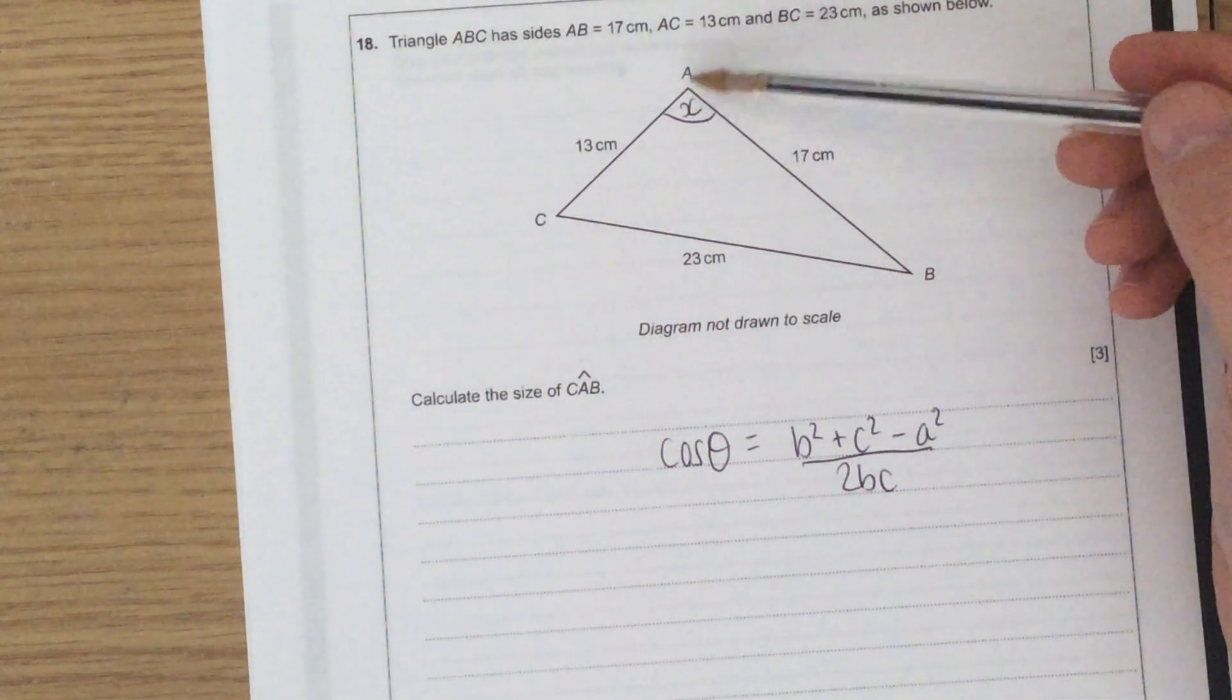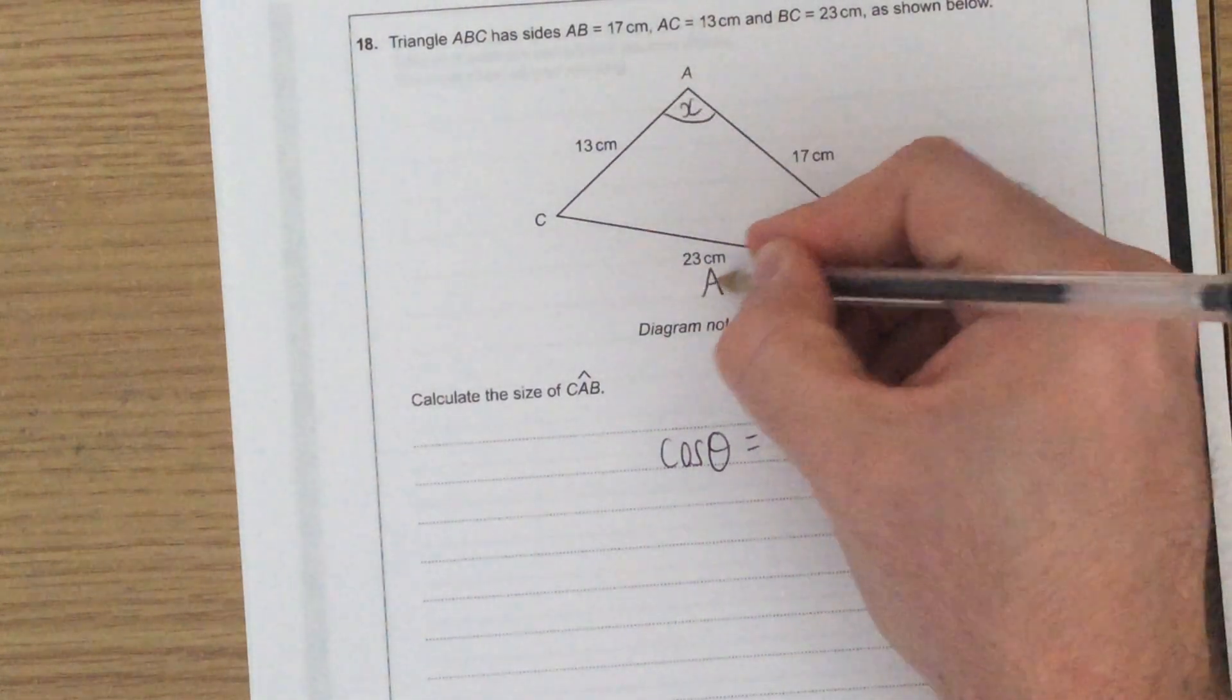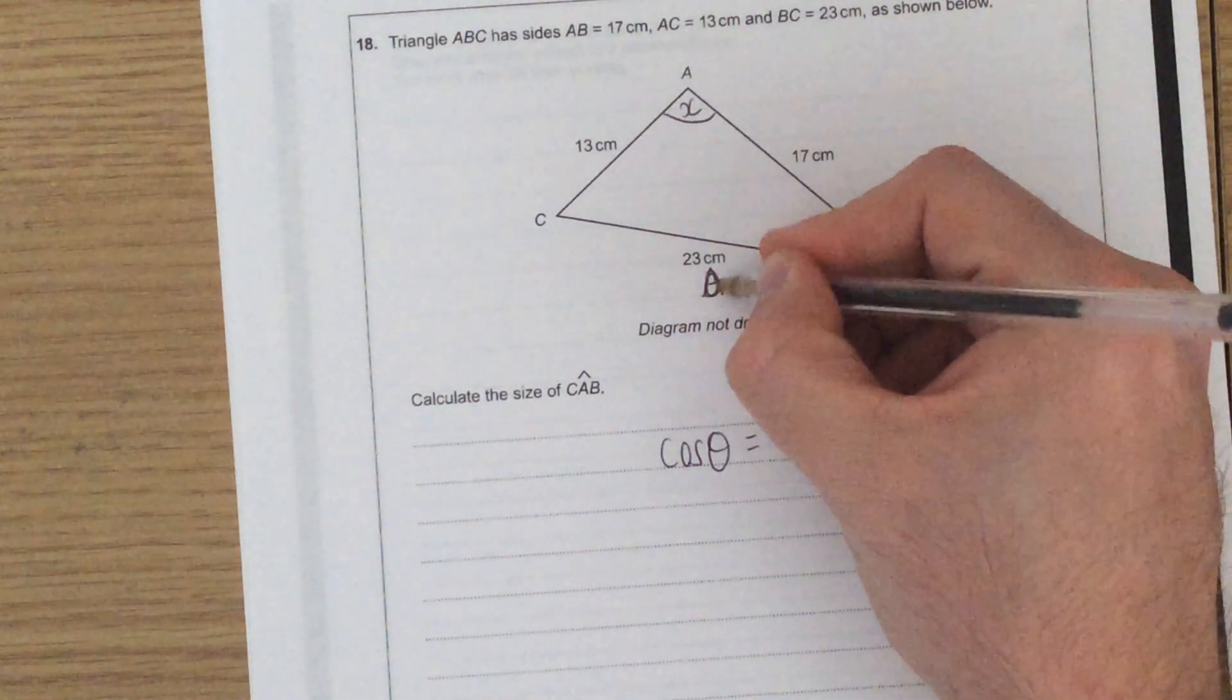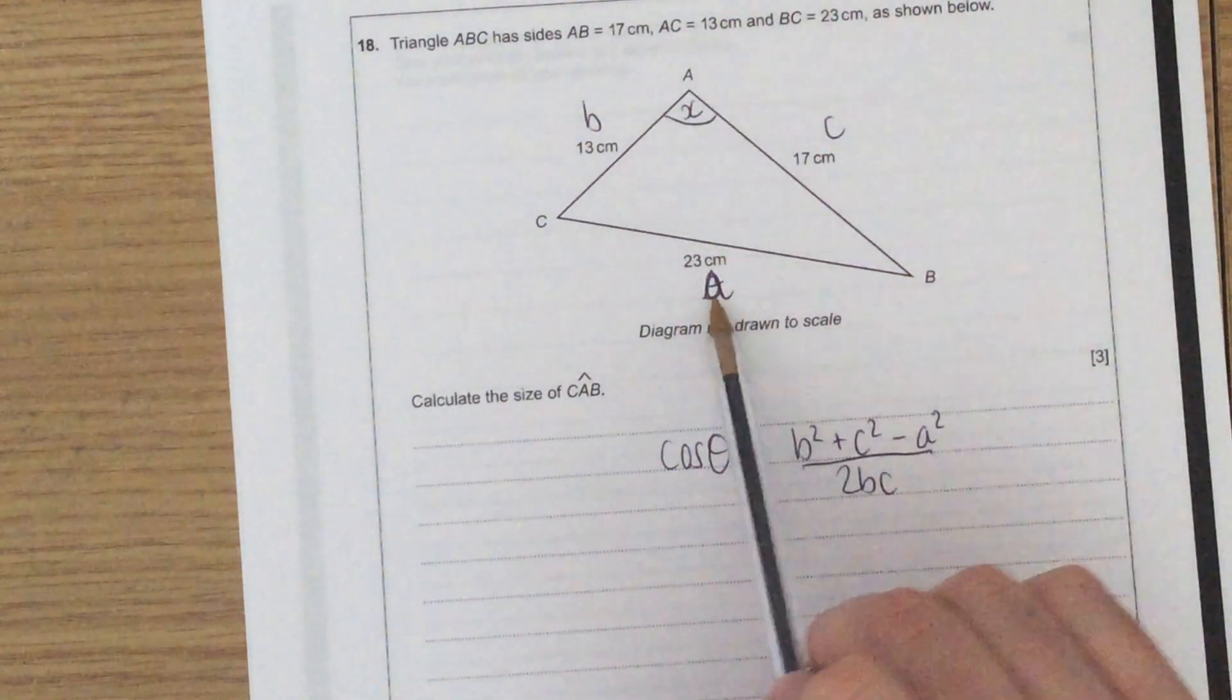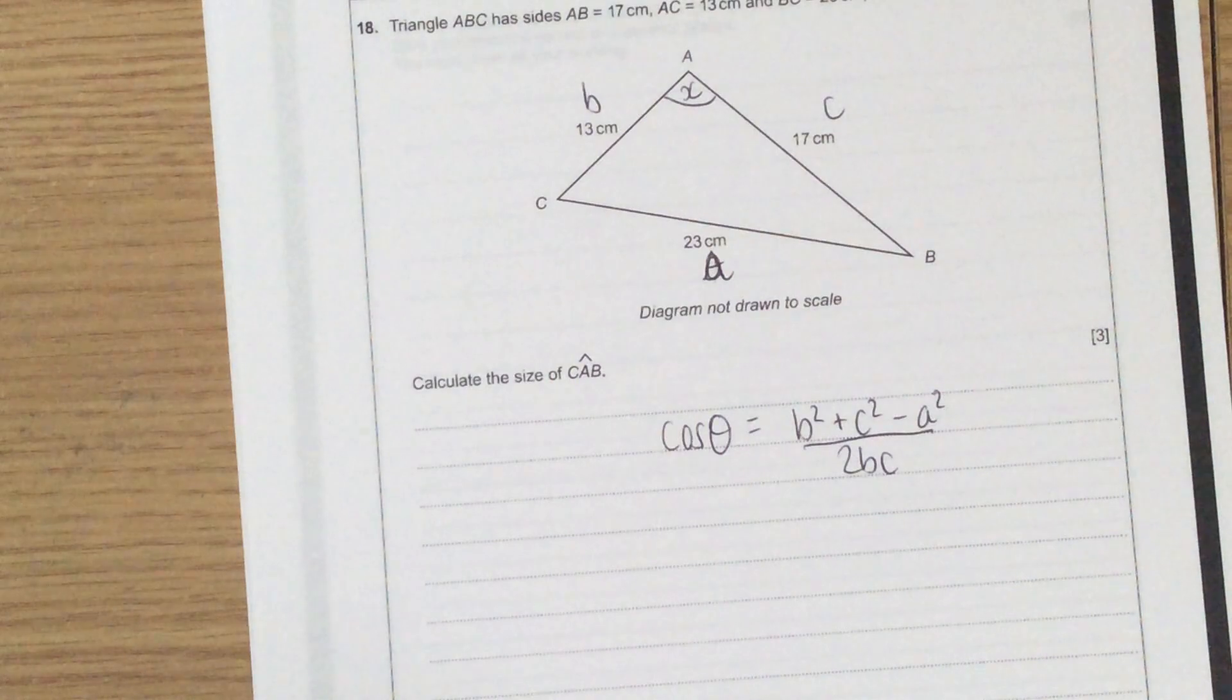Now remember, theta always needs to be a, which in this case is already labelled correctly. So I know that this must be side length a, this must be side b, and this must be side c. You can see I wrote capital A by accident there. Remember, sides are always little letters.